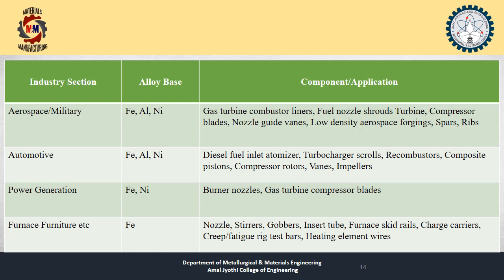In aerospace and military applications, ODS alloys are used in gas turbine combustor liners, fuel nozzles, shrouds, turbine and compressor blades, nozzle guide vanes, low-density aerospace forgings, spars, and strips. In the automotive industry, they are used for diesel fuel inlet atomizers, turbocharger scrolls, wave combustors, composite pistons, compressor rotors, vanes, and impellers. In the power generation and furnace sector, ODS alloys are also being used.